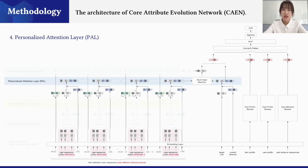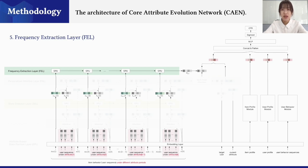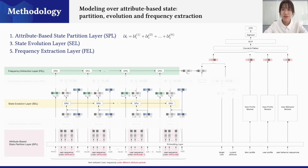And then, the fourth layer, personalized attention layer, is applied to activate the similar users' parameters and similar attribute values among item behavior history. In addition to the personalized attention, frequency extraction layer is also used to capture the frequency of item attribute change, which quantifies the activity level of the seller's operation. And it also indicates how much of a difference this core attribute evolution network will make.